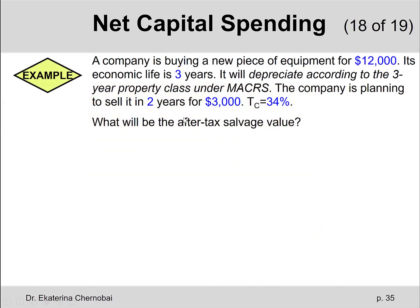Let's look at the same example we had earlier for straight-line depreciation and change one thing: the equipment we'll be buying will now depreciate according to the three-year property class under MACRS. A company is buying a new piece of equipment for $12,000. Its economic life is three years, but the company plans to sell it in two years for $3,000. The tax rate is 34%. What will be the after-tax salvage value?